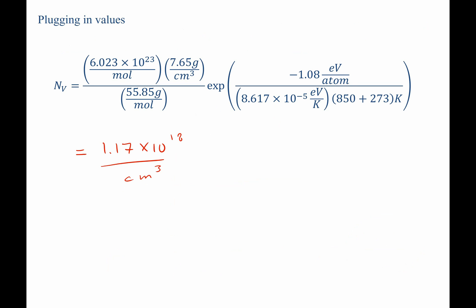However, the question specifically asked us to solve for the number of vacancies per meter cubed, not centimeter cubed. So we need to introduce a factor to convert. We know that there are 100 centimeters per meter, but we're talking about volumes, so we have to cube this in order that our centimeter cubed cancel out and we're left with meters cubed.